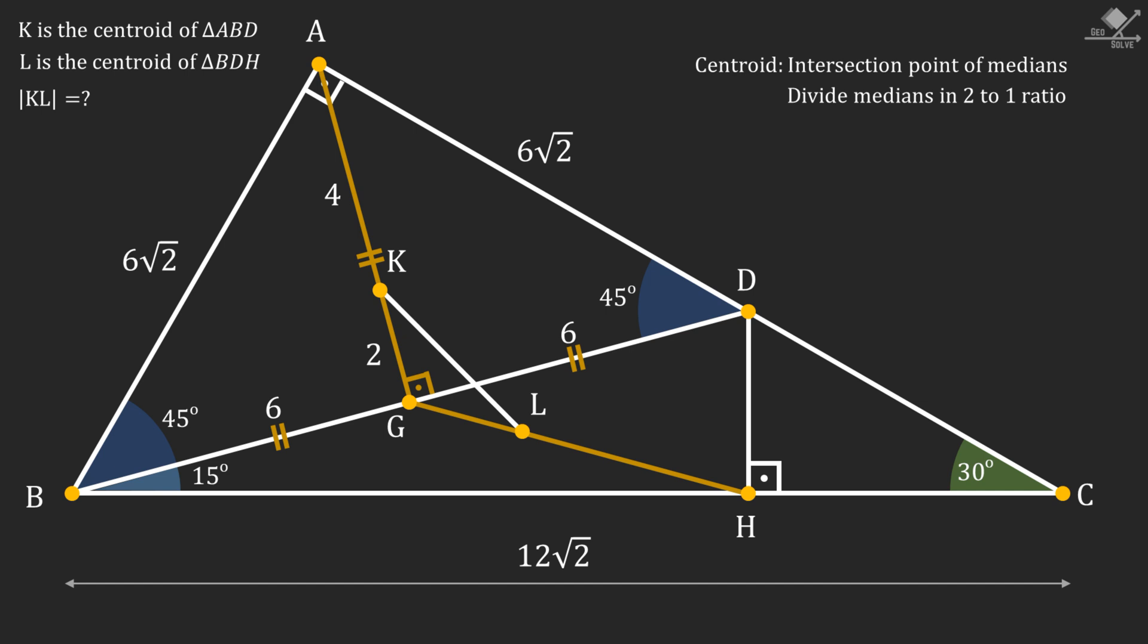Using midpoint theorem on right-angled triangles, it can be seen that line segment GH will also be 6 units. Since L is the centroid, the length of the line segment GL will be 2 units, and LH will be 4 units.